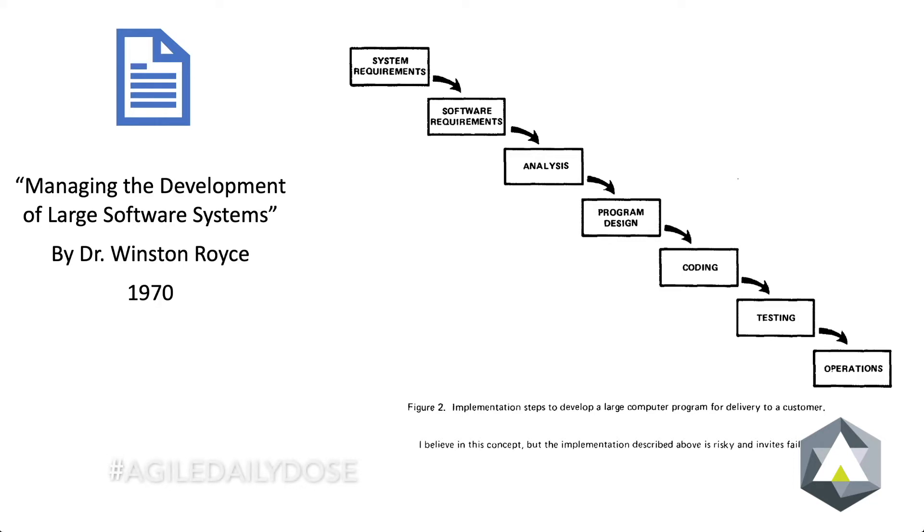Against that backdrop, Dr. Winston Royce wrote a paper titled Managing the Development of Large Software Systems, which he presented at an IEEE conference. The paper was later scanned and is available as a PDF on the internet. The image you see is from page two of the paper.